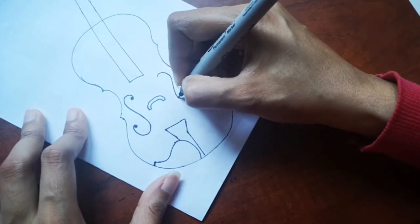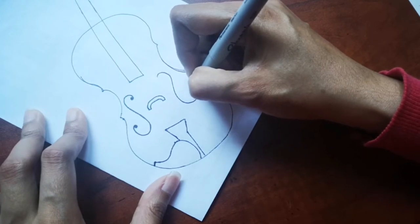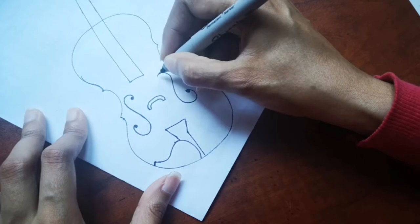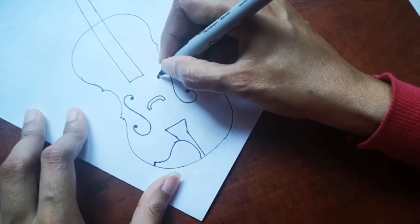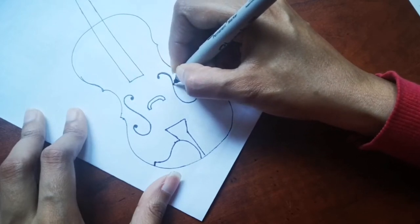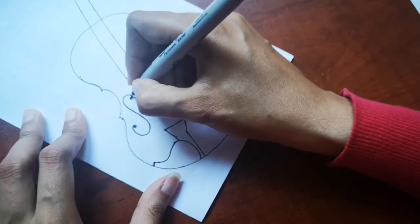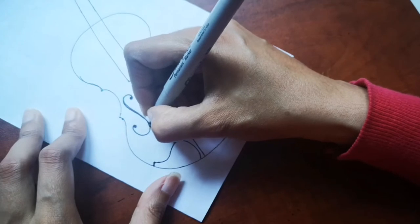So when we are coloring it, we can use blacks and browns and then a little bit of orange if you want. Not bright orange, but like a darker shade of orange so that it looks and gives that wood look.